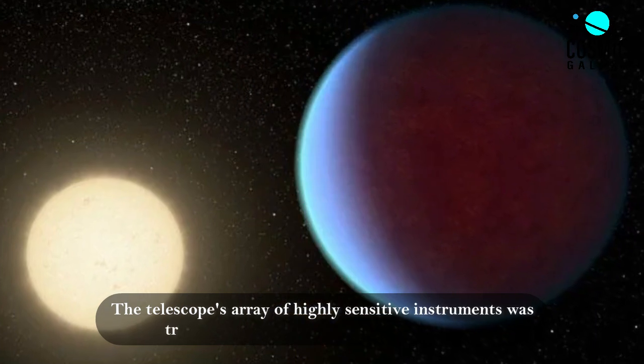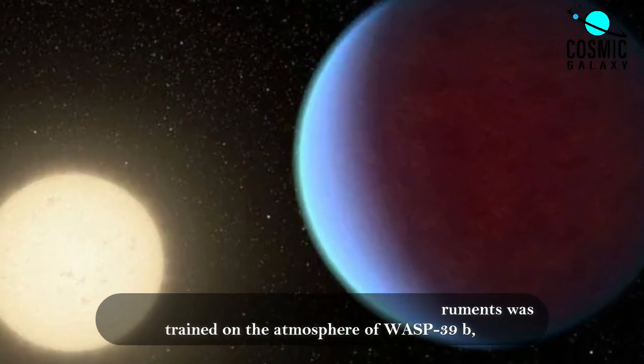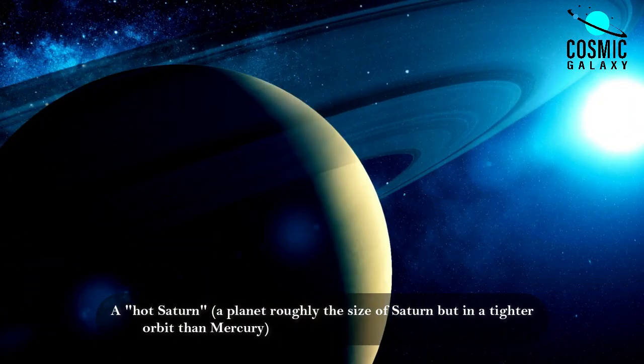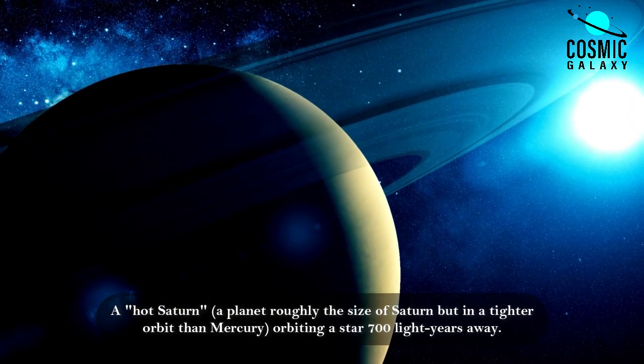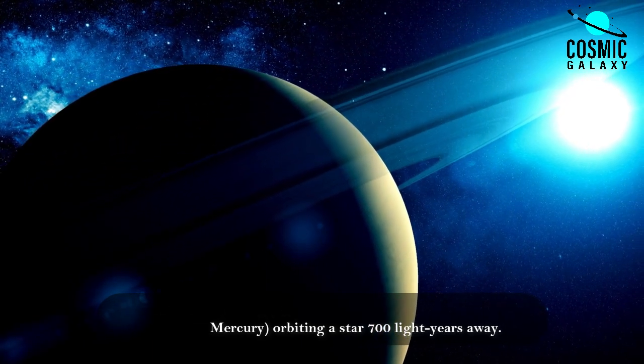The telescope's array of highly sensitive instruments was trained on the atmosphere of WASP-39b, a hot Saturn. A planet roughly the size of Saturn, but in a tighter orbit than Mercury, orbiting a star 700 light-years away.